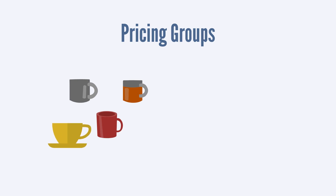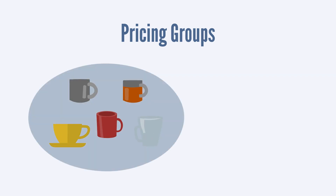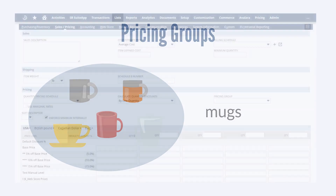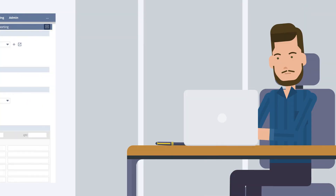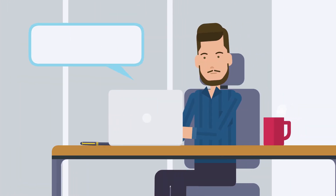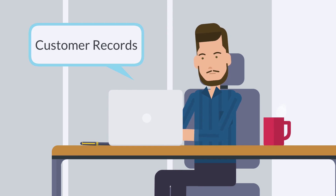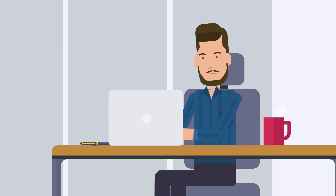Next, let's look at pricing groups. Pricing groups are simply a helpful way to organize related items. For example, if you sell different types of mugs, you might create a pricing group called 'Mugs.' If the item you are working with belongs in a pricing group, select that group from the pricing group drop-down list. Once you have associated an item with a specific pricing group, you can select that group on customer records so that NetSuite knows to apply that pricing group's price levels for those customers.